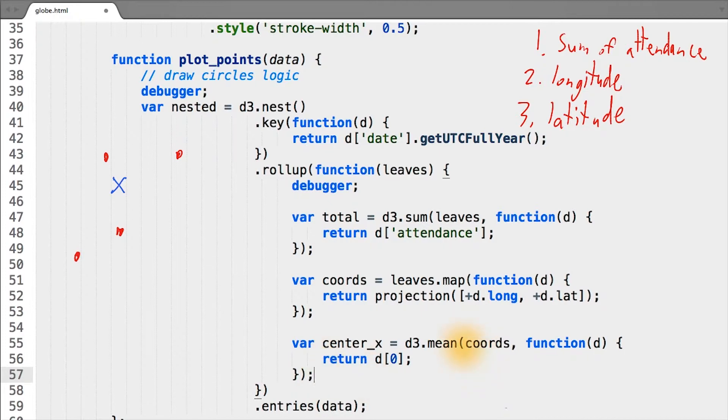In this case, every element of coordinates gets passed to our callback function, and whatever we return from this callback function gets averaged by the d3 mean function and stored as a single value, in our case, in center_x.